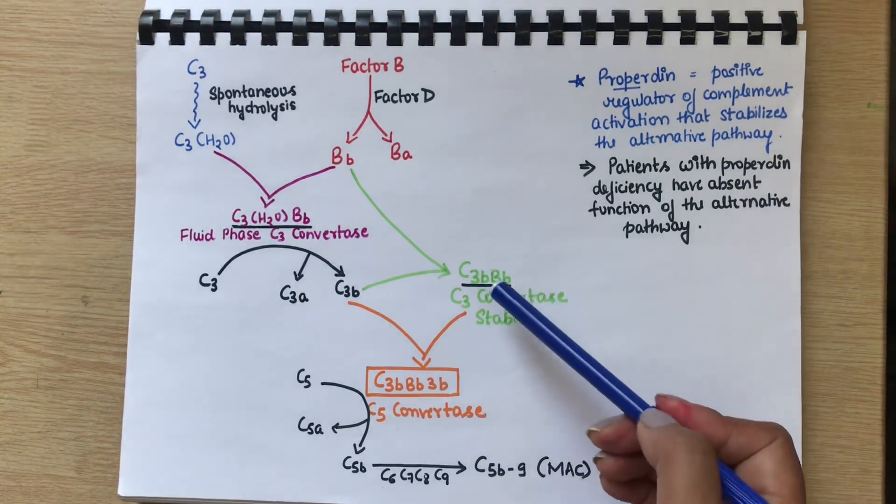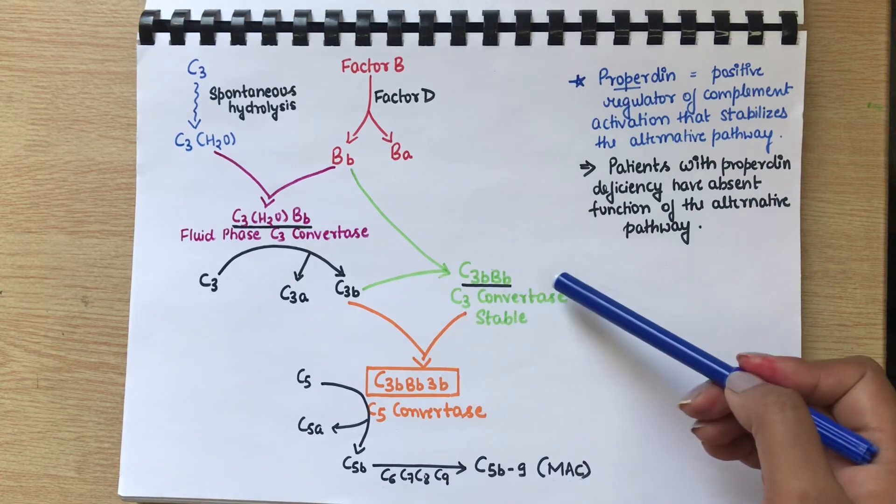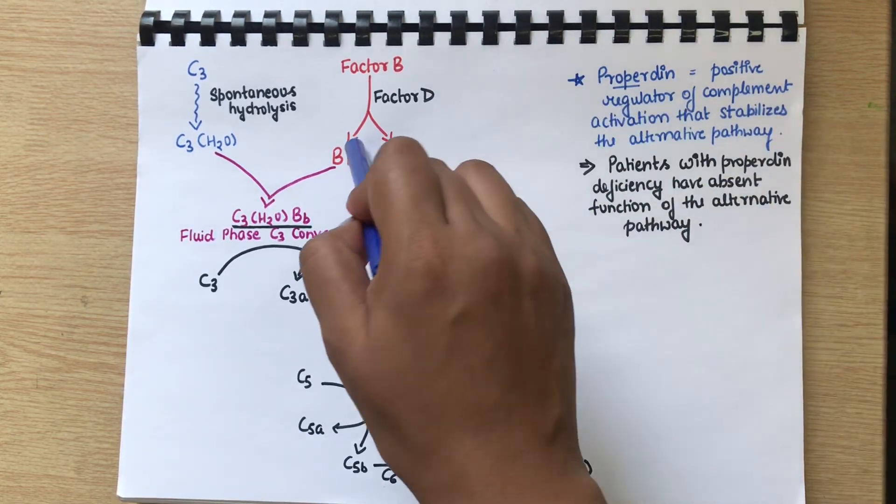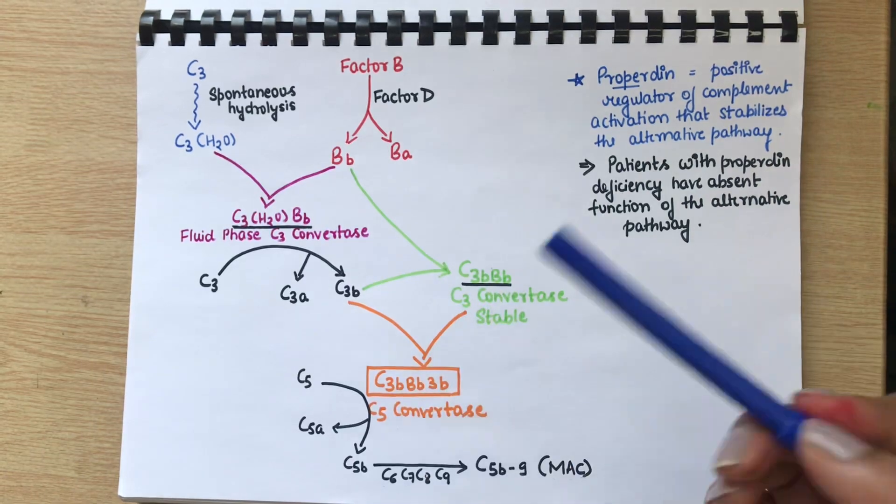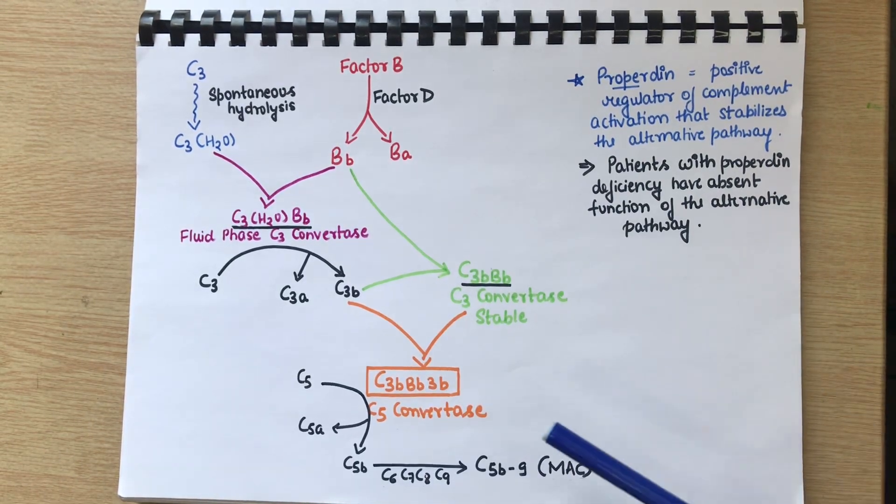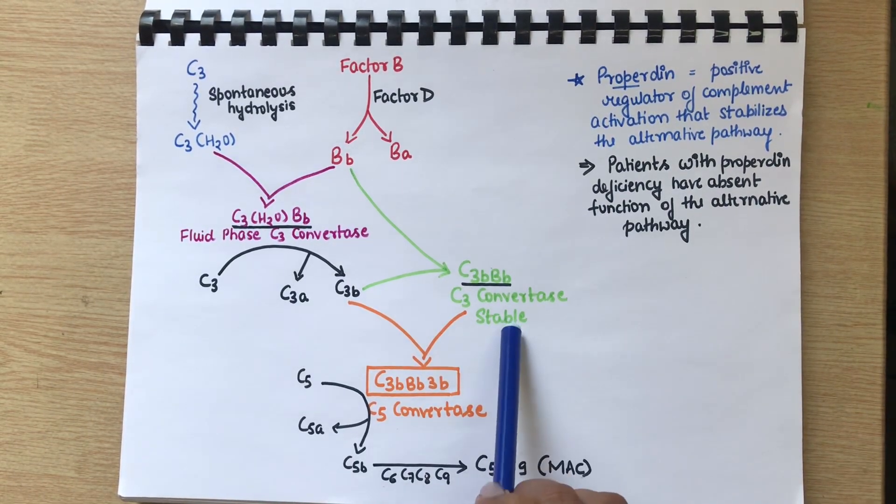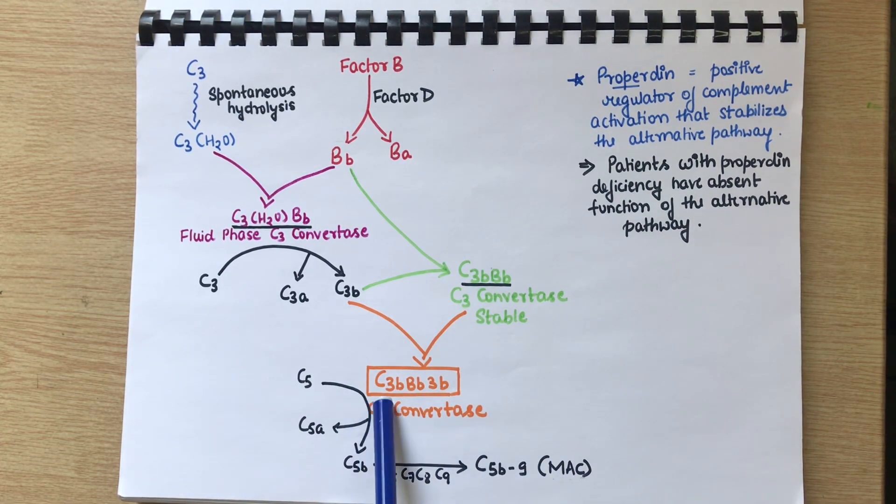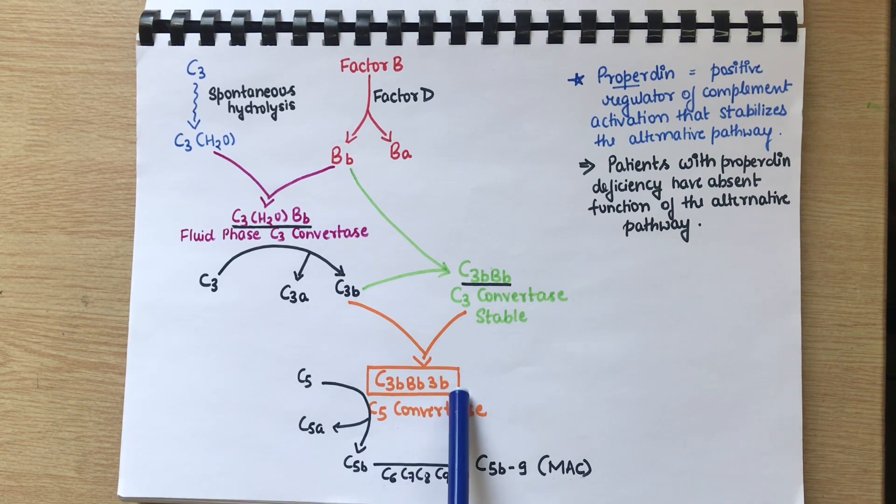As the name suggests, C3 convertase will again cleave C3 into C3a and C3b. Then C3b will go and combine with Bb and form more stable C3 convertase. Now the C3 convertase will combine with C3b and form the C5 convertase, which is C3bBb3b. This is known as C5 convertase.